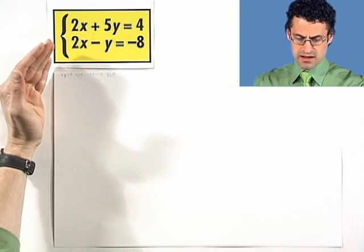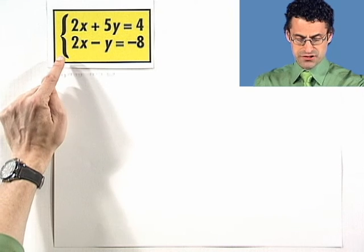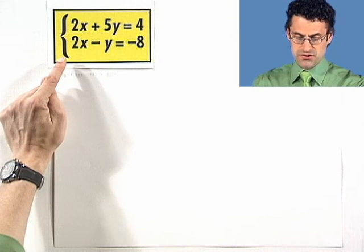Let's take a look at another example where we can use elimination as a means of producing, from two equations, one equation with only one variable. Here I see 2x plus 5y equals 4, and 2x minus y equals negative 8.